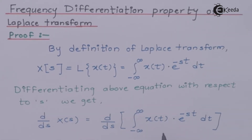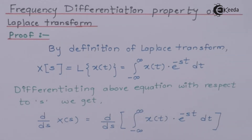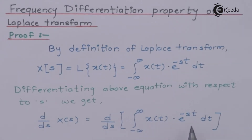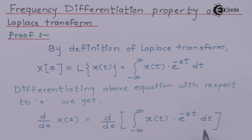On the right hand side, only the term which carries S will be differentiated. Look at here — only e to the power minus ST is the term which can be differentiated, because the rest of the terms are constant. Since these remaining constant terms are present in a product form, we can keep X(T), the integration, and DT separately, and only e to the power minus ST will be differentiated.